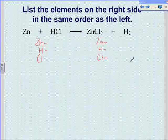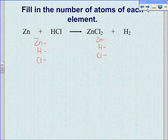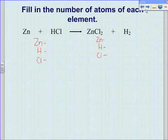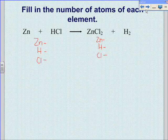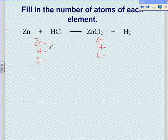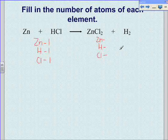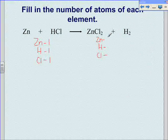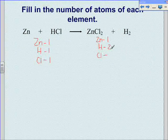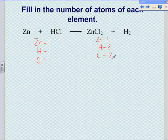Writing the elements in the same order makes it easy to check if the equation is balanced later. Next, count the number of atoms of each element found on each side of the equation. The left side has one atom of zinc, one atom of hydrogen, and one atom of chlorine. The right side has one atom of zinc, two atoms of hydrogen, and two atoms of chlorine.